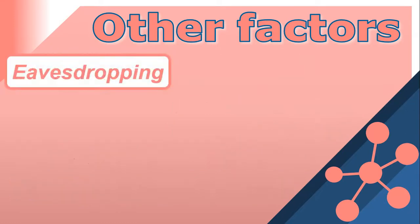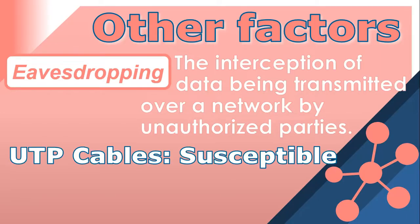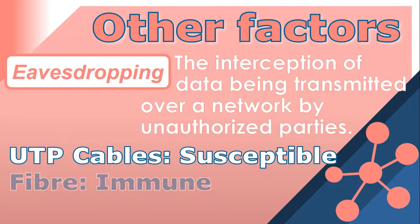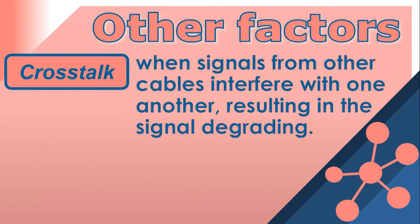Eavesdropping refers to the interception of data being transmitted over a network by unauthorized parties. UTP cables are susceptible to eavesdropping because they emit electromagnetic interference and can be intercepted by attackers using specialized equipment. In contrast, fiber cables do not emit electromagnetic radiation, making them immune to eavesdropping, as the flow of light would be broken if someone tried to intercept it.